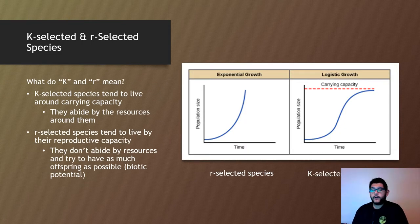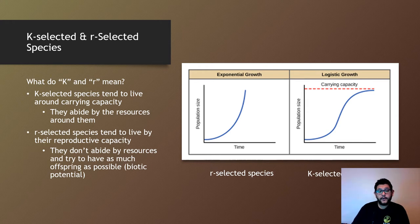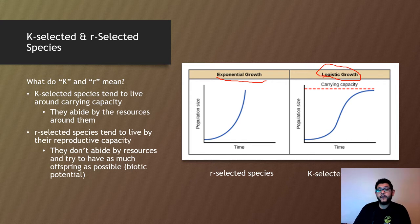The difference between an R-selected and a K-selected species — the best way to look at that is to look at your growth charts and see how a population can grow. This right here is exponential growth, typically known as a J curve, and then logistic growth is typically known as your S curve. K-selected species tend to live around the carrying capacity, which is how much the environment can support a population.